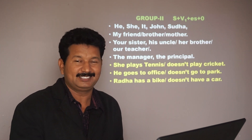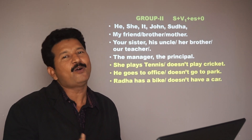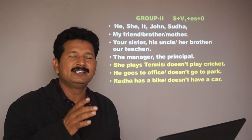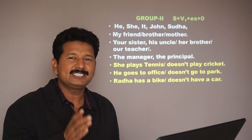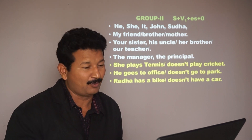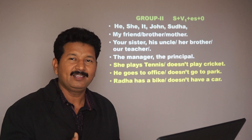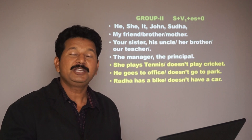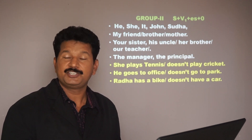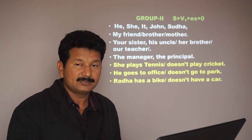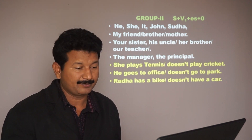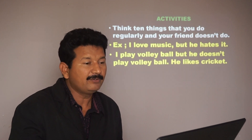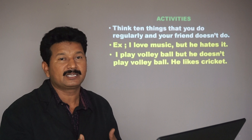In Group 2 you have to be a bit careful. When you use he, she, or a single person's name, you use the structure subject plus V1 plus S. For example: she plays tennis but she doesn't play cricket; he goes to office, he doesn't go to the park; Raja has a bike but she doesn't have a car.